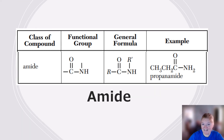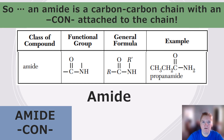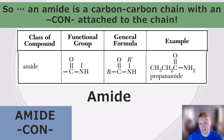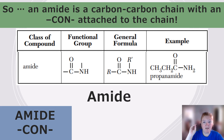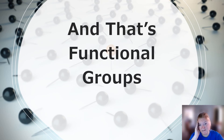Last one: amide. Amide has a C double bond O and an N — so it's a carbon chain with a CON group attached. This one is almost always at the end and typically no address is given. You'll see this one at the end.